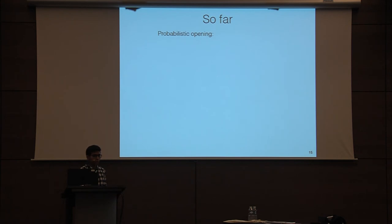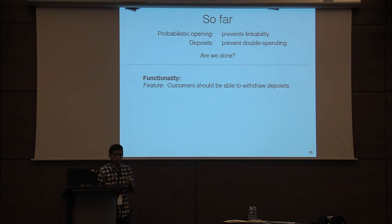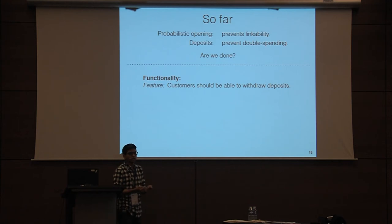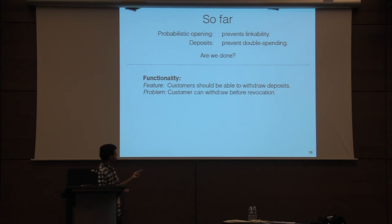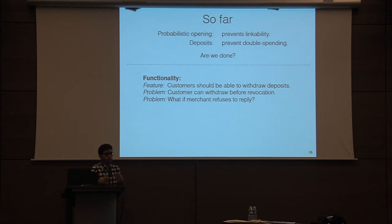So far we've used probabilistic opening and deposits to prevent linkability and double spending. But we're still lacking in terms of both functionality and security analysis. What happens when the customer wants to leave the system — can they withdraw the deposit? Ideally you want them to be able to withdraw it, because otherwise the deposit money is a sunk cost and they're incentivized to keep cheating to recover as much as they can. But if you allow them to recover the deposit, they can just withdraw it right before the deposit is revoked, defeating the entire purpose. We run into similar issues with merchant aborts and attempts to frame the customer for double spending.